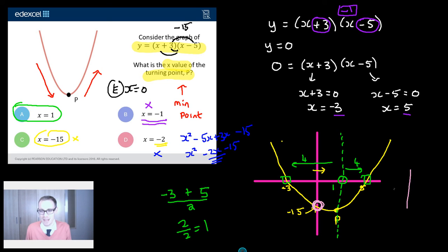x equals 0 is that point there. And it's very tempting to draw quadratic graphs with lines of symmetry on the y-axis. But that's not the case. The line of symmetry is the average between the crossing points.